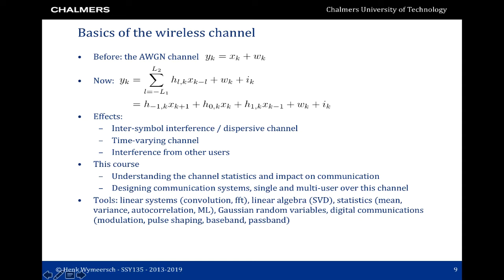We now look into some of the mathematics of the wireless channel. Before we do that, we recap the additive white Gaussian noise channel. In this first equation, x_k is the transmitted constellation point, w_k is noise, and y_k is the observation. In the wireless channel, y_k is still the observation, x_k is the transmitted constellation point, w_k is noise, but now we also have i_k which is interference from other users, and then we have a channel h_{lk} where l is delay, so the channel has l_1 plus l_2 taps and is time-varying with index k.